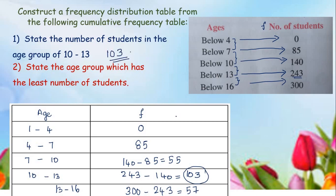One more question: state the age group which has the least number of students. The least frequency is 0. So the answer is the age group 1 to 4, which has the least number of students.